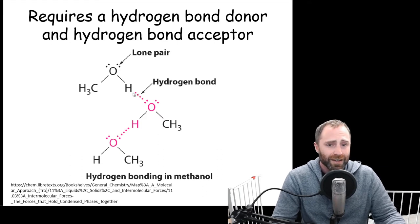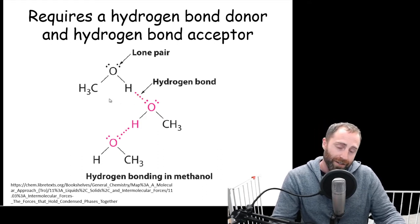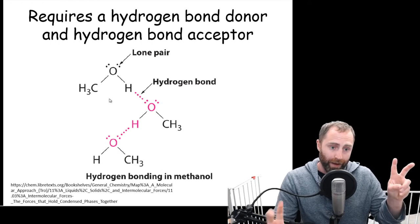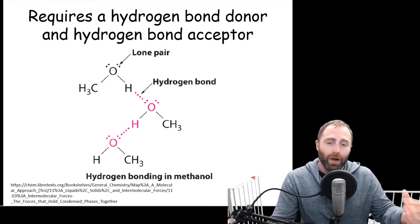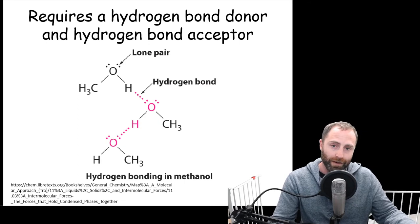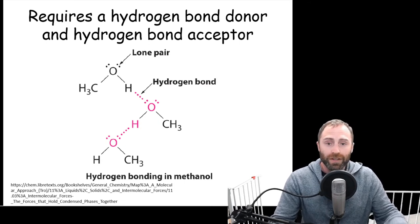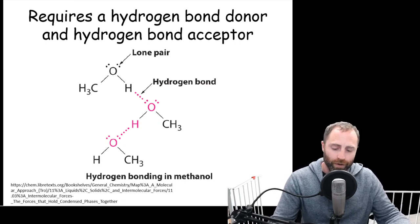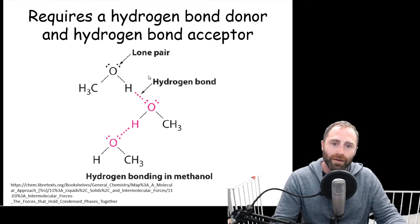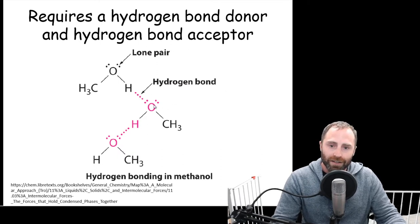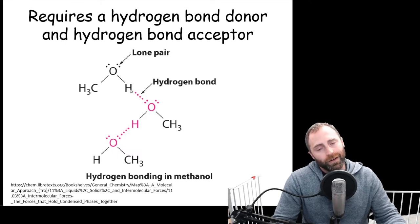This through-space interaction between the lone pair and the hydrogen is the hydrogen bond. It's not a bond in the way a covalent or ionic bond is, but it is a very strong intermolecular force. You need a hydrogen bond donor and a hydrogen bond acceptor — the acceptor is the hydrogen with the partial positive charge, and the donor is the lone pair.